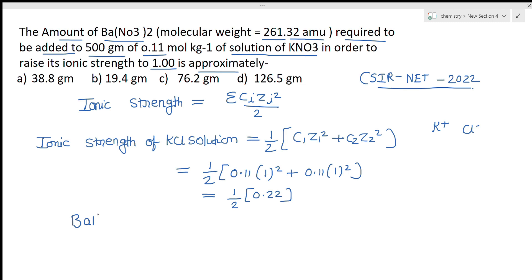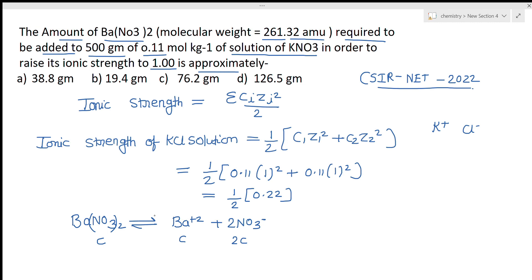Now we are adding Ba(NO₃)₂ to the KNO₃ solution. When Ba(NO₃)₂ dissociates, it gives Ba²⁺ ions and 2 NO₃⁻ ions. If the concentration of Ba(NO₃)₂ is c, then the concentration of Ba²⁺ is c and the concentration of NO₃⁻ is 2c. We now need to calculate the total ionic strength of the combined solution.